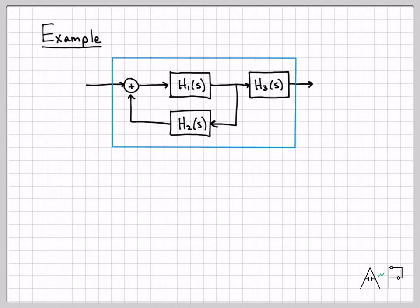So here's a system. In blue, I've called this a system. Internal to the system, there's a lot going on: there's a summation, there's this other subsystem H1 of s, H3 of s, H2 of s, there's this feedback loop. So there's lots going on, but from just thinking about this as kind of this blue overall box...